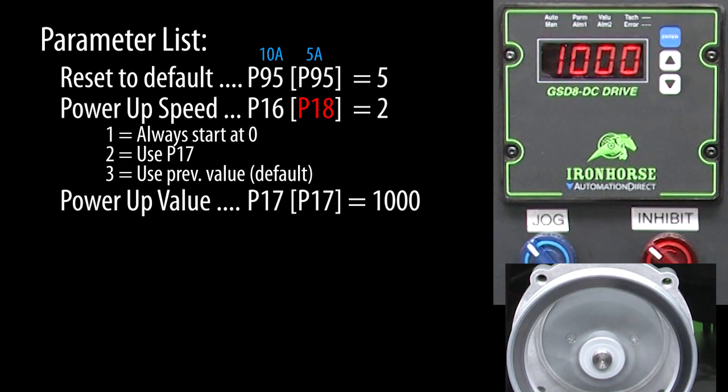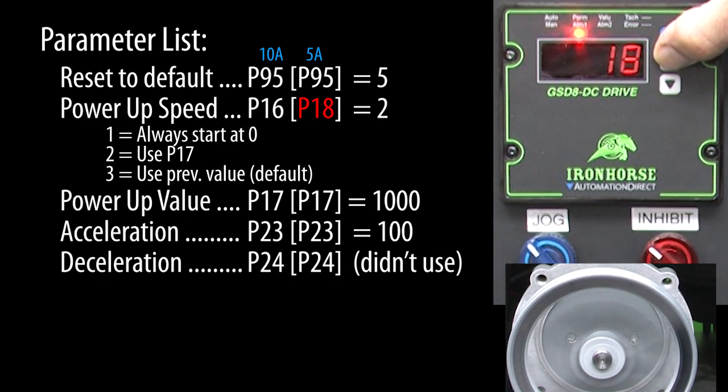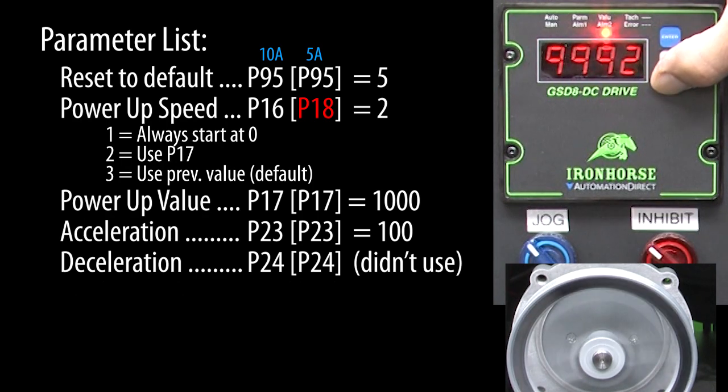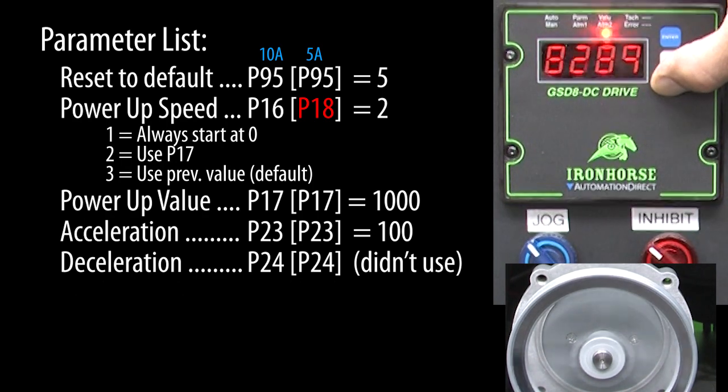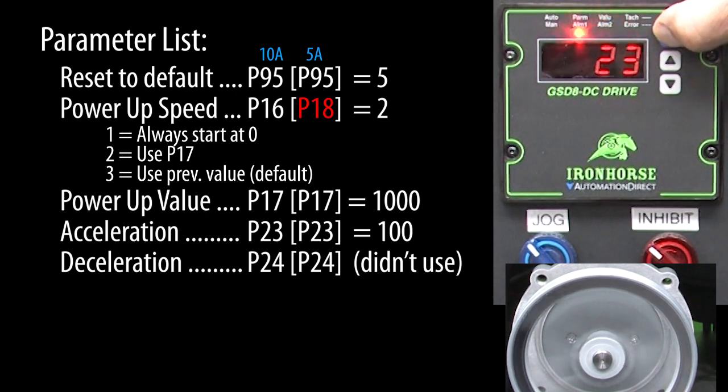We got our rate set. How about the acceleration and deceleration? Those are in parameters 23 and 24. Hold down the enter button for 3 seconds, scroll to parameter 23, hit enter. This is in engineering units per second, which for us is RPM. The 9999 says ramp up as fast as possible. We are running the motor at 1000 RPM, so if we say we want to accelerate at a rate of 100 RPM per second, it should take 10 seconds to ramp up to speed. Enter to accept that.